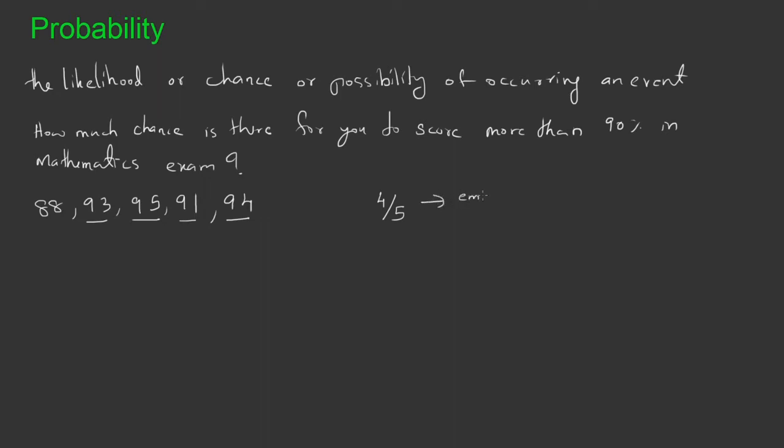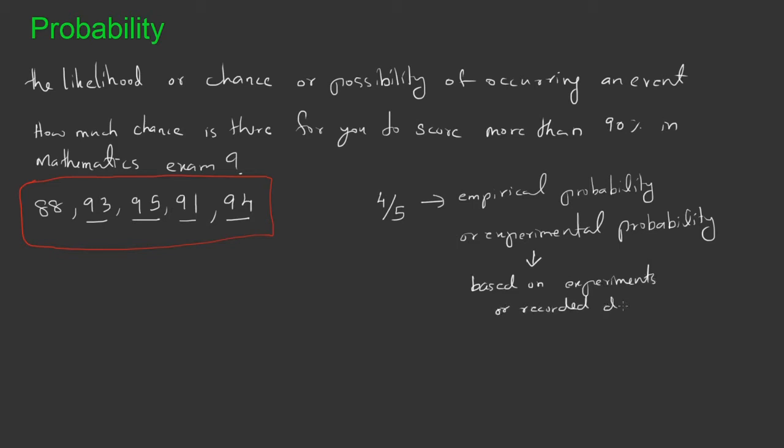I call it empirical probability or experimental probability because it is based on data from previous occurrences. Empirical or experimental probability is calculated based on experiments or recorded data. In this chapter, we only look into experimental or empirical probability.